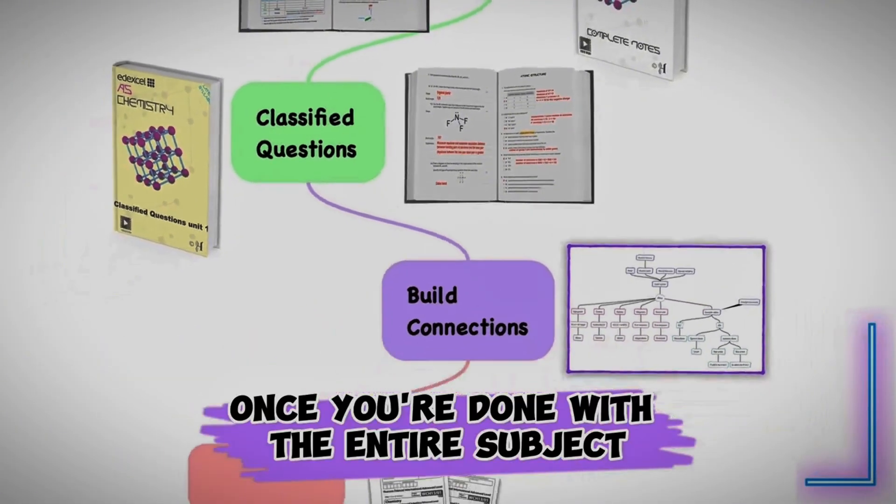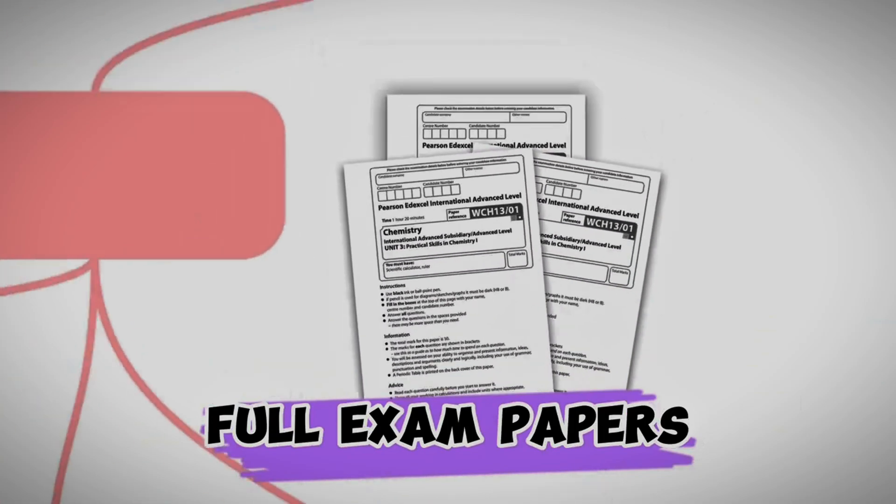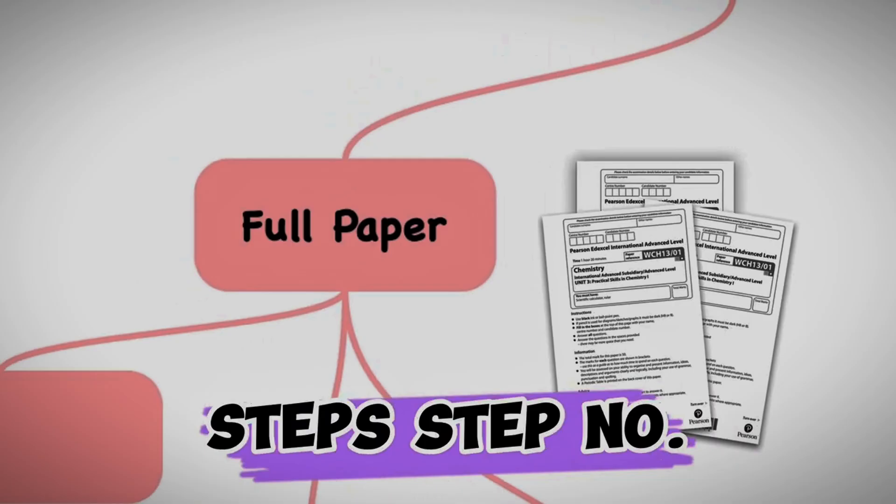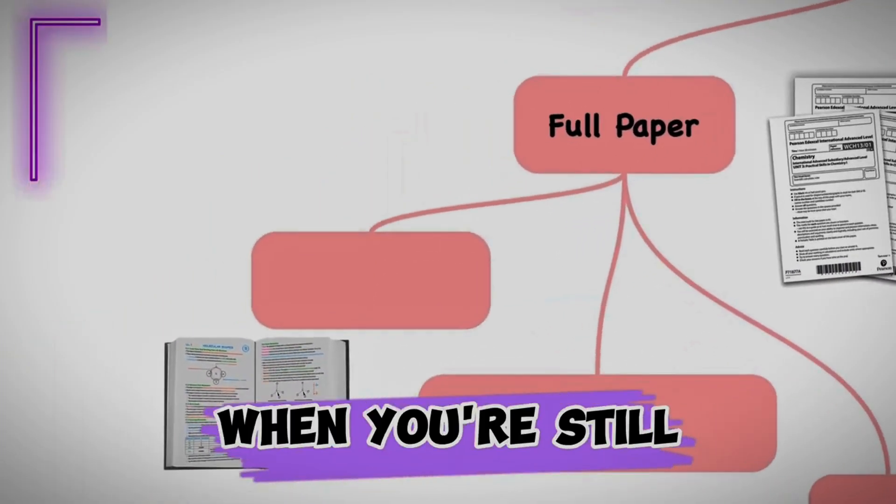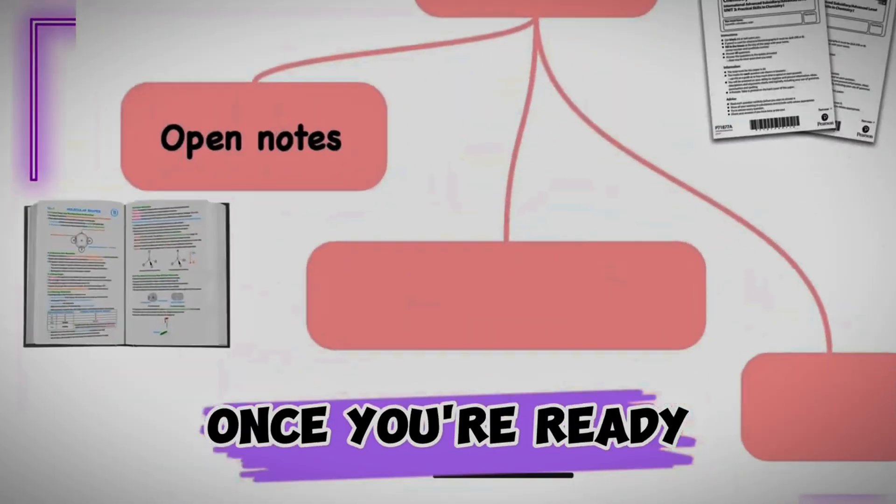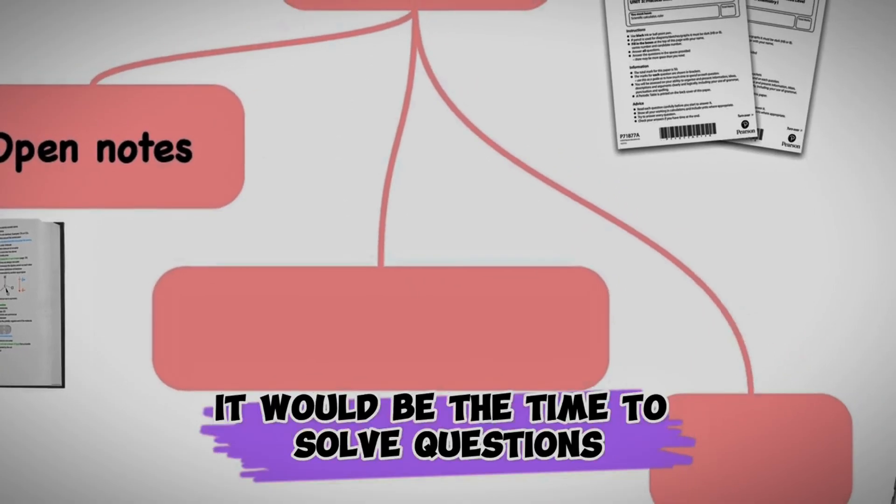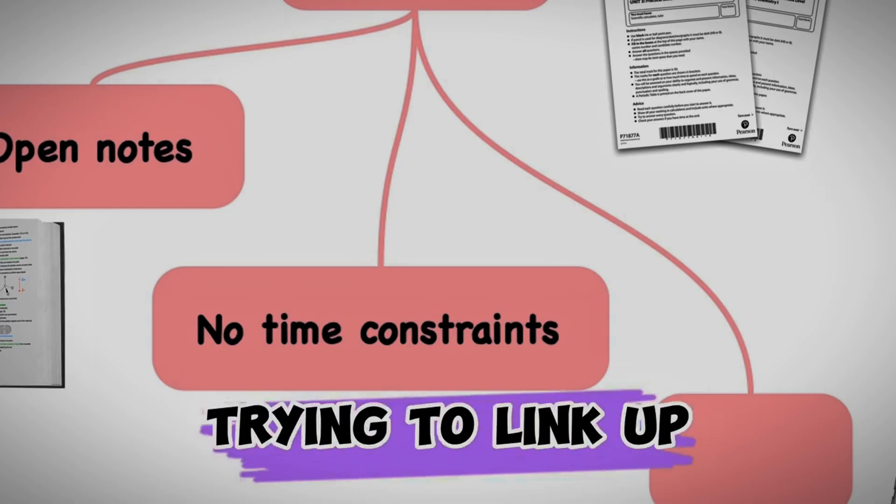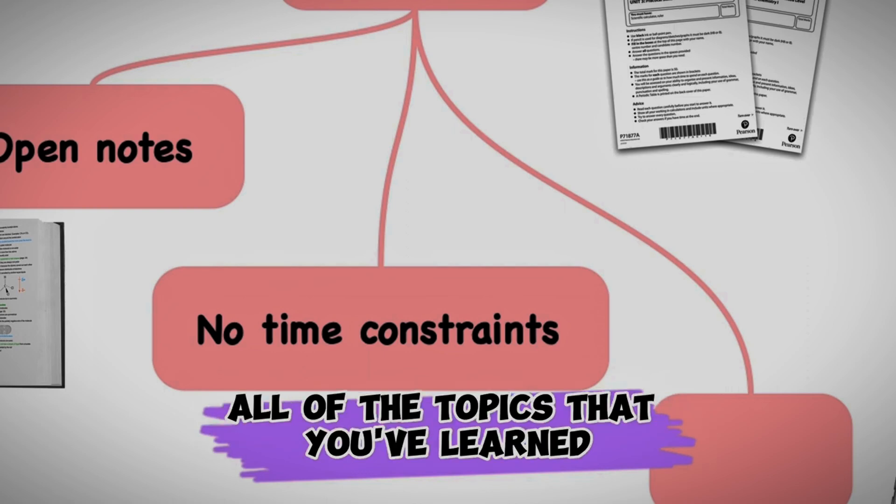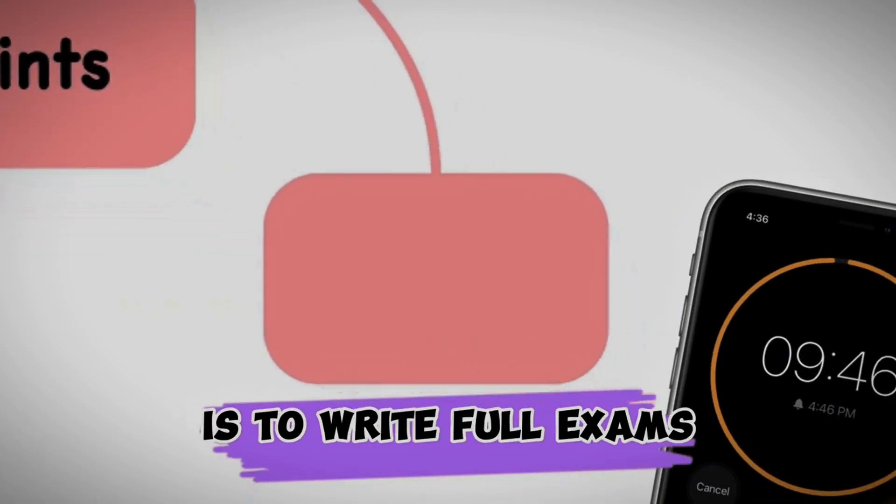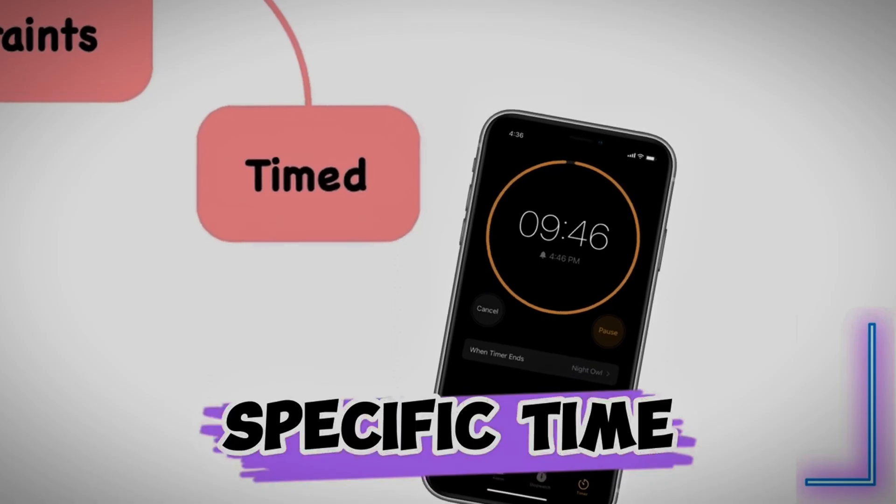Once you're done with the entire subject, it's time to solve full exam papers. Now solving full exam papers goes over three steps. Step number one is when you're still taking it slow and you're still using your notes while you're solving. Once you're ready, once you feel more confident, it would be the time to solve questions. But you give yourself more time because you're still learning the content, you're still trying to link up all of the topics that you've learned in this specific unit.